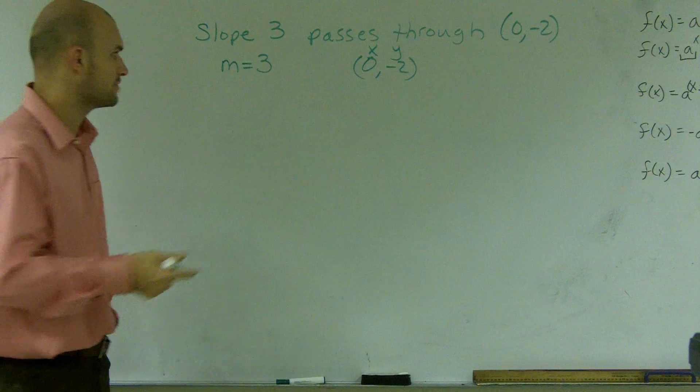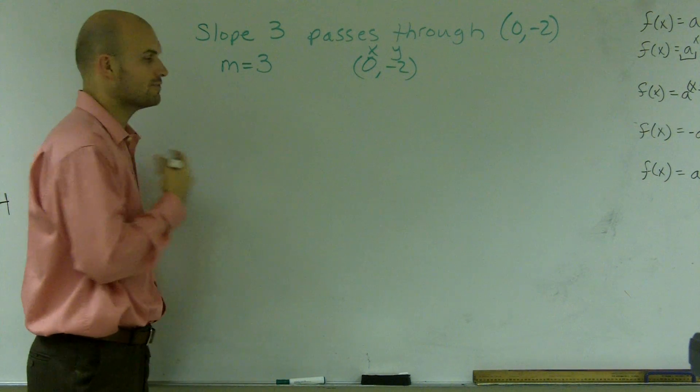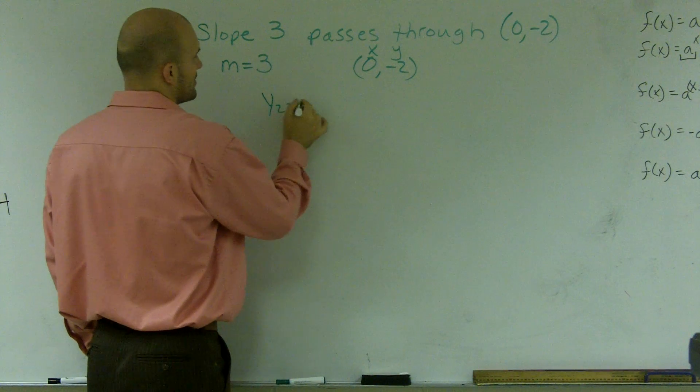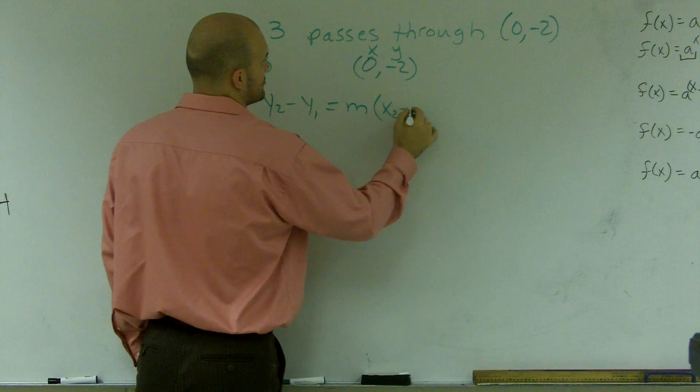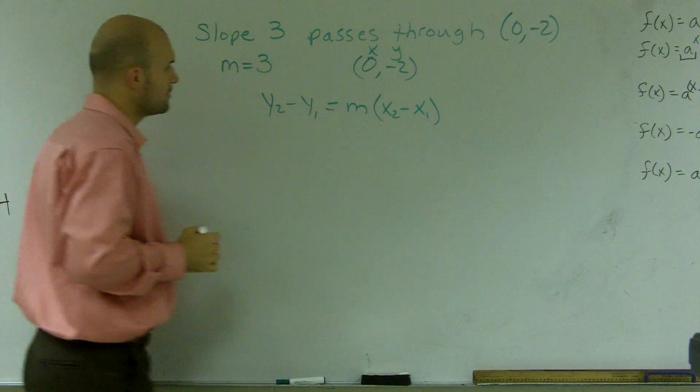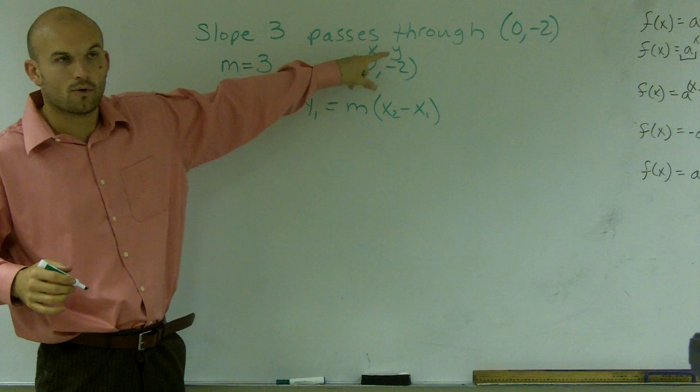I'm going to use the point-slope method to show you how to do this problem. So if you remember, the point-slope formula is going to be y2 minus y1 equals m times x2 minus x1. And what you notice is we have our m, which is our slope, and we have one point xy.